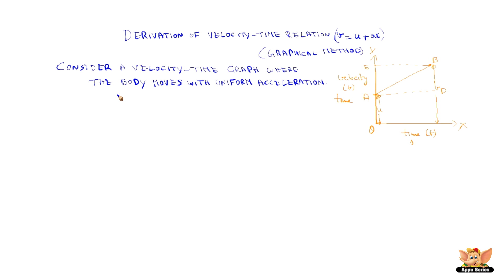Consider a velocity-time graph where the body moves with uniform acceleration. That is why AB is a straight line.